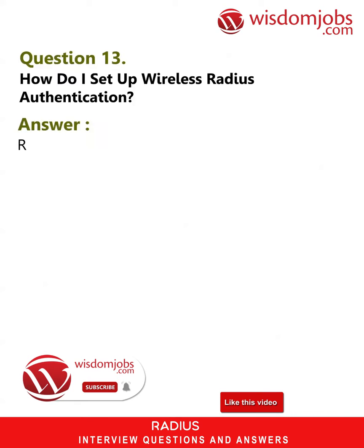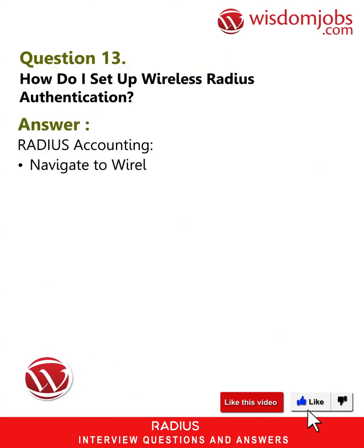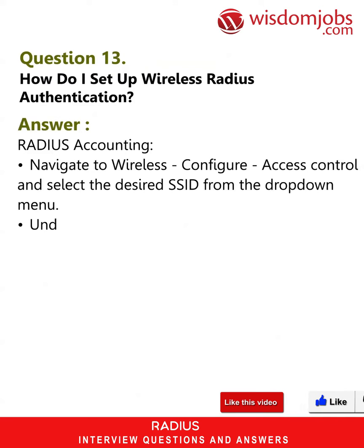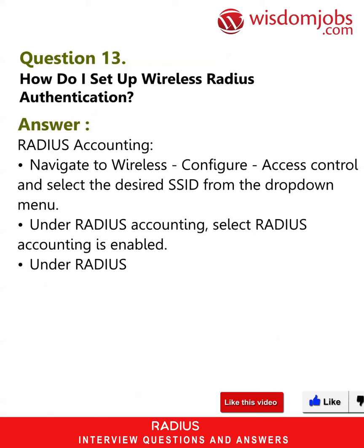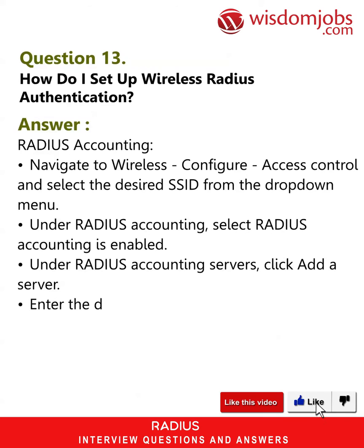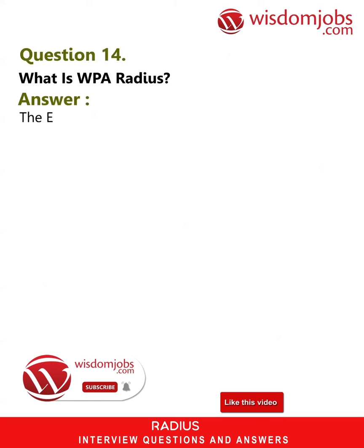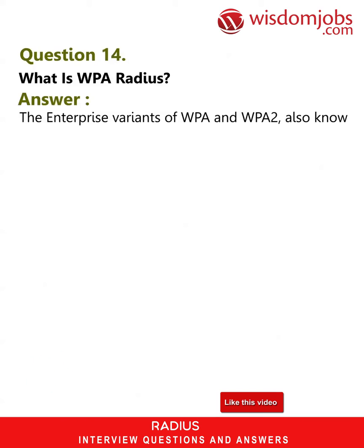Question 13: How do I set up wireless RADIUS authentication? For RADIUS accounting, navigate to Wireless > Configure > Access Control and select the desired SSID from the drop-down menu. Under RADIUS Accounting, select 'RADIUS accounting is enabled.' Under RADIUS Accounting Servers, click 'Add a server,' enter the details, and click Save Changes.